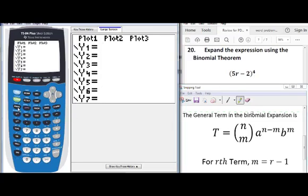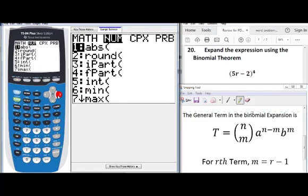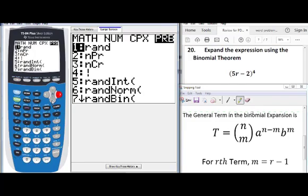Then I need to go to 4, then go to math, probability, then go to 3. Enter.